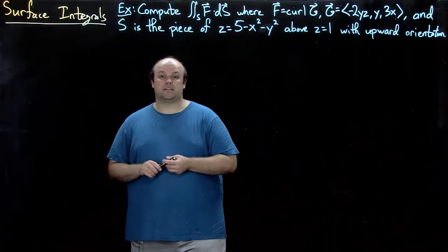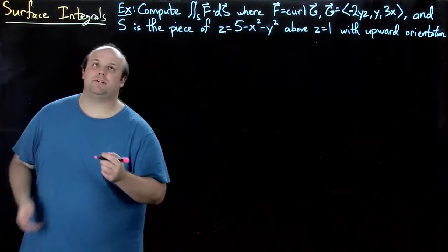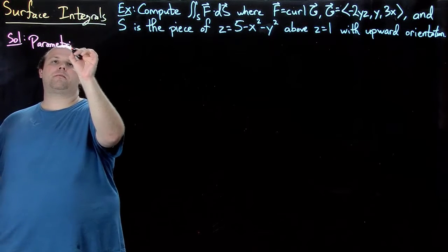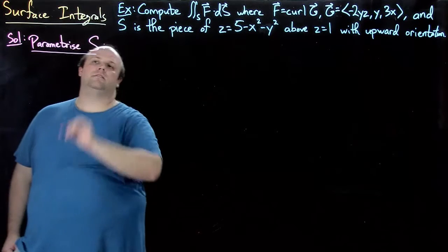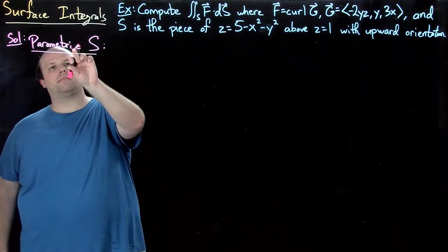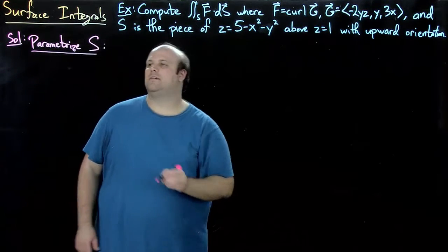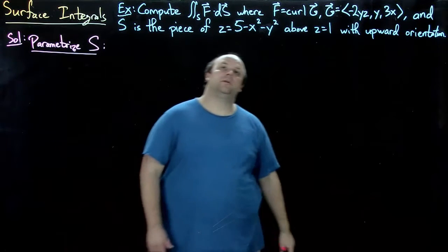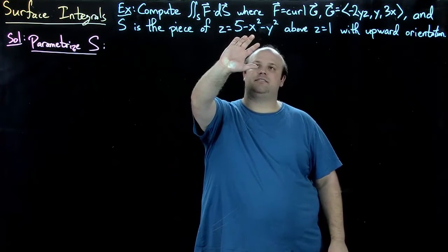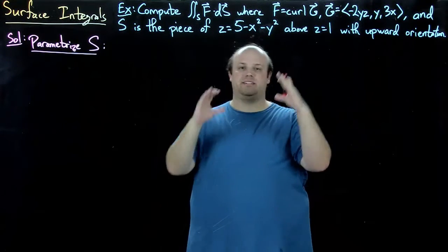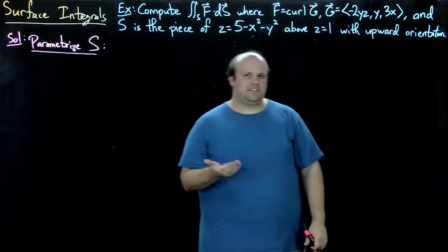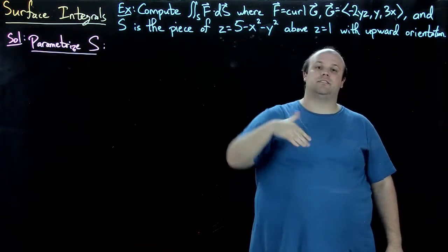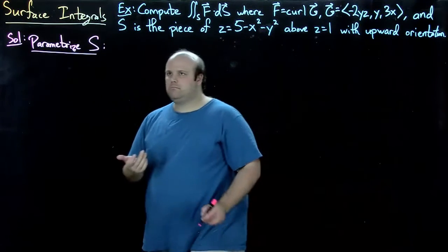We have a few steps to compute here. The first thing we should do is parametrize this surface. Looking carefully at this equation, we have 5 minus (x² + y²), which suggests using cylindrical coordinates since the bounds of the region are described as a function of z.